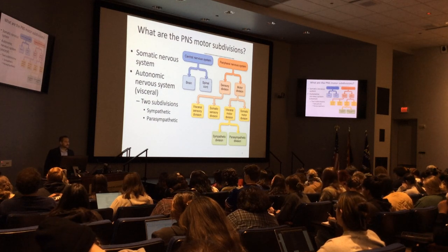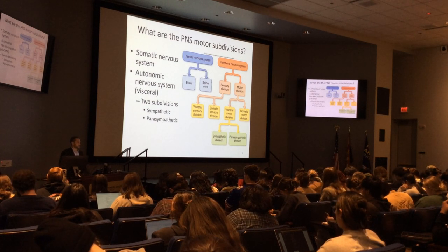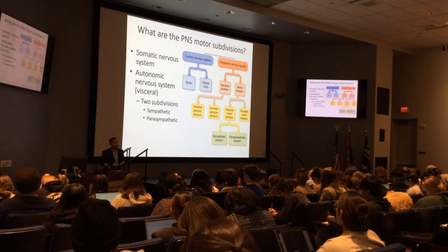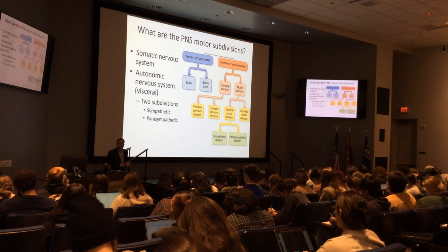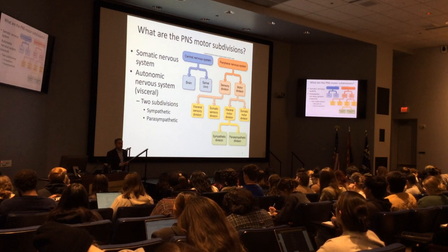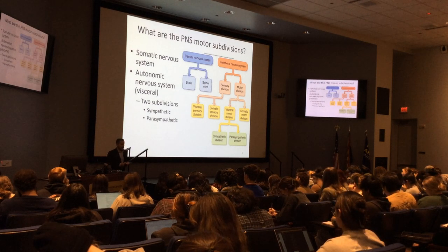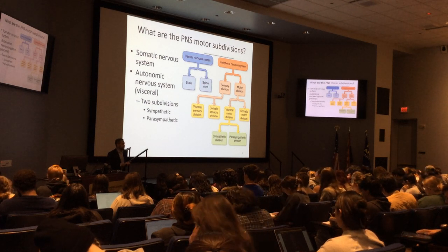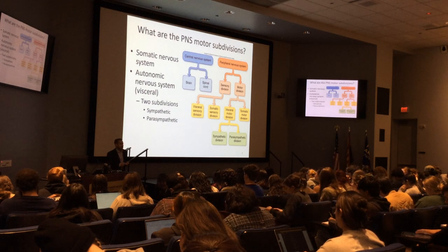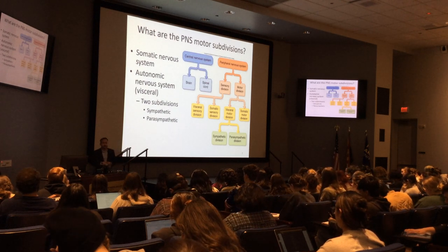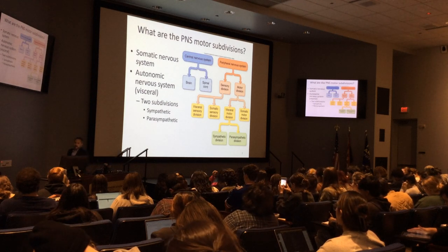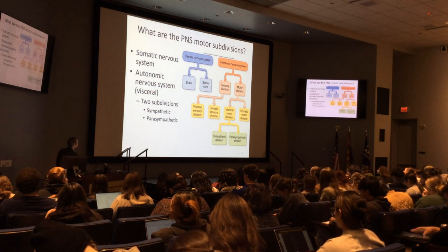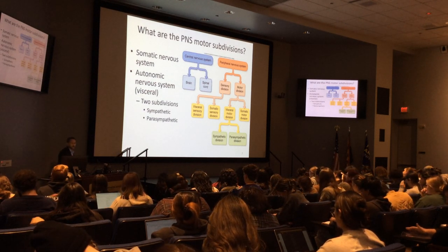Involuntary control regulates things like smooth muscle. Smooth muscle lines the GI tract, your esophagus, blood vessels, sphincter openings in the body — lower esophageal sphincter, upper esophageal sphincter, pyloric sphincter emptying out of the stomach into the small intestine. The autonomic system, also known as visceral, is further broken down into sympathetic and parasympathetic.